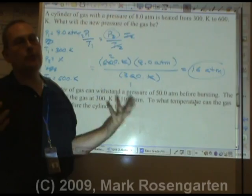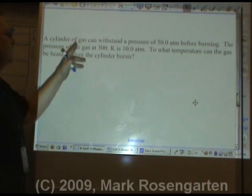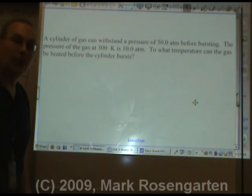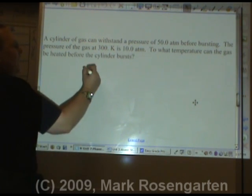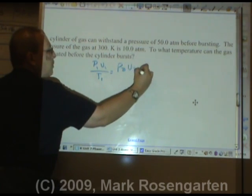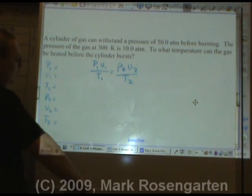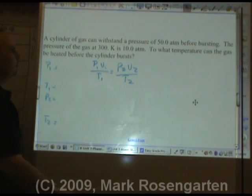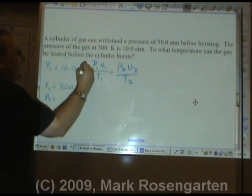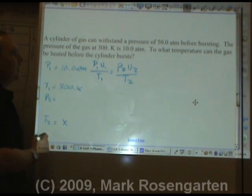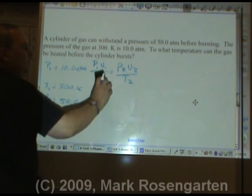That makes sense: if you double the temperature, you double the pressure because it's a direct relationship. Now we have a cylinder we have to prevent from bursting. The pressure of the gas is given, and we need to find what temperature you can heat it to before the cylinder bursts — the maximum temperature before it goes kaboom. P1V1/T1 = P2V2/T2. A cylinder of gas that can withstand a pressure of 50 atmospheres before bursting has a gas pressure of 10.0 atm at 300 Kelvin.